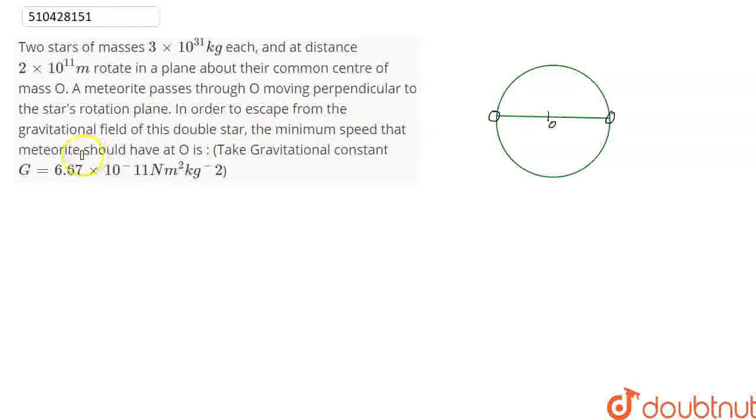In the gravitational field of the double star, the minimum speed that meteorite should have at O is... So see, the mass is 3 × 10^31, and the distance is 2 × 10^11.